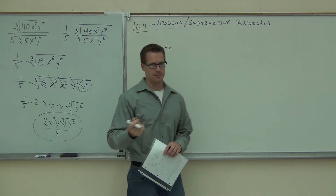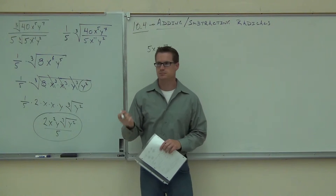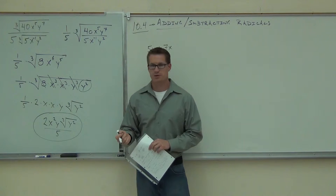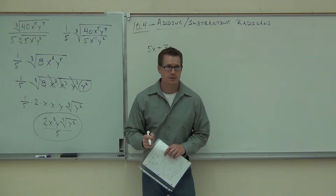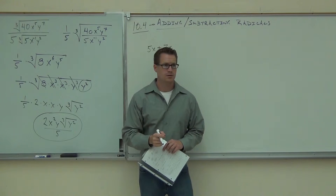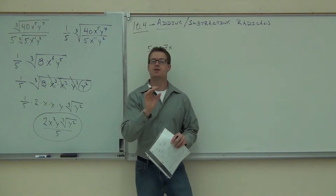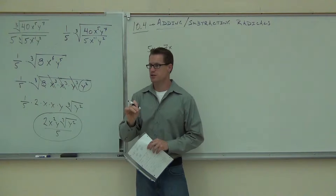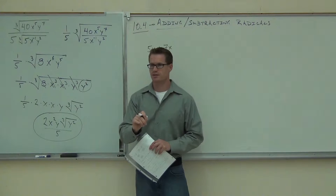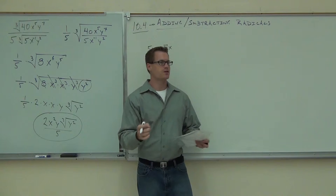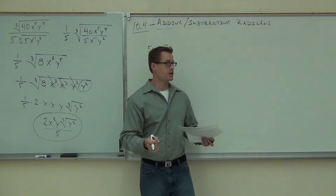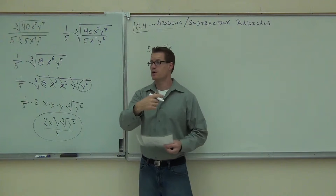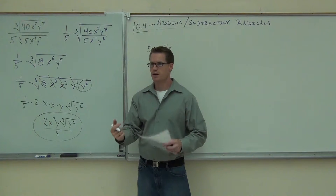Can you add those together? How much did you get? 12x. That's the whole question — do you get 12x or do you get 12x squared? 12x. You're not multiplying, that's right. You have 5x's here, you have 7x's there, together you have 12x's. You don't have 12x squared.